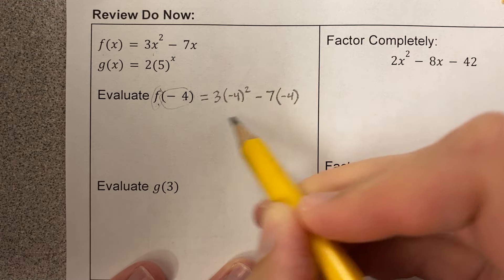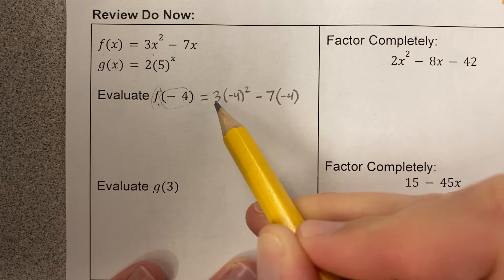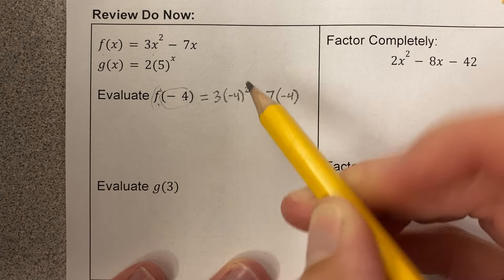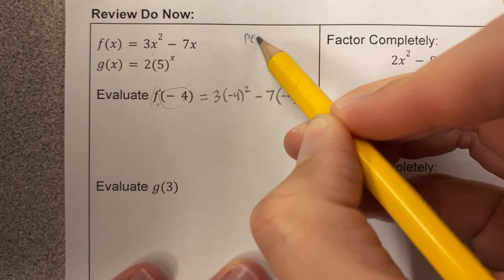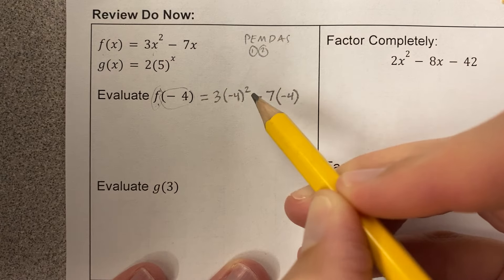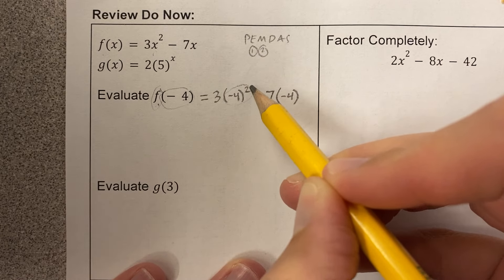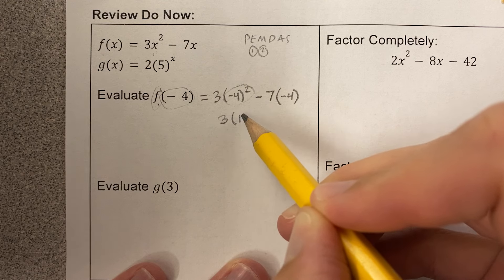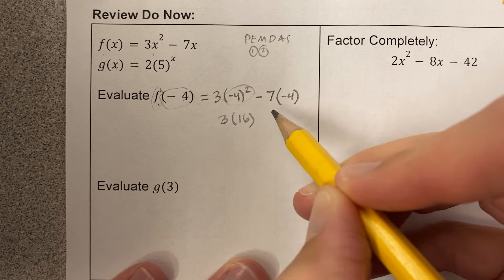So this is the tricky part right here, and it's a really common mistake to do 3 times 4 first, but we don't do that. This is multiplication and exponents, and if we remember, when we have our order of operations, the exponents comes first before the multiplication. So I'm going to do this first. That's negative 4 squared. That's negative 4 times negative 4. That's positive 16. Negative times negative is positive.